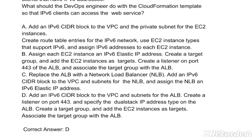Option C: Replace the ALB with a Network Load Balancer (NLB); add an IPv6 CIDR block to the VPC and subnets for the NLB and assign the NLB an IPv6 Elastic IP address. Option D: Add an IPv6 CIDR block to the VPC and subnets for the NLB; create a listener on port 443 and specify the dual-stack IP address type on the NLB; create a target group and add the EC2 instances as targets; associate the target group with the NLB. The correct answer is Option D.